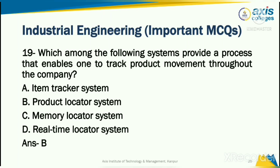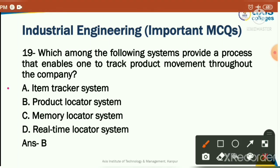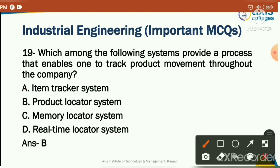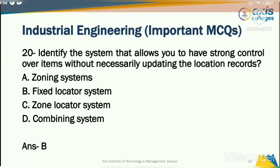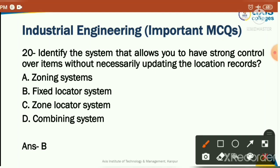Which among the following system provides a process that enables one to track product movement throughout the company? Options: item tracker system, product locator system, memory locator system, or real-time locator system. The correct answer is option B: product locator system — it tracks all product movement throughout the company across various processes.